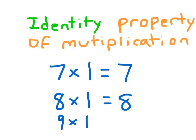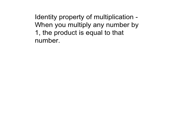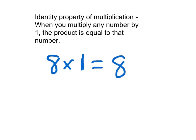So we multiply by 1 and that product is still equal to 9. We could also have it on the other side of the equation — for example, 6 equals 6 times 1. Or you could even have 5 equaling 1 times 5. Let's write a definition. The identity property of multiplication: when you multiply any number by 1, the product is equal to that number. For instance, 8 times 1 still equals 8. Go ahead and hit pause, copy down that definition, and write some examples.